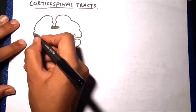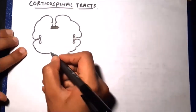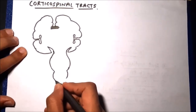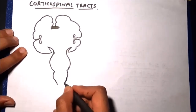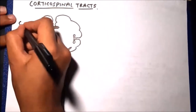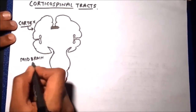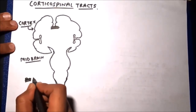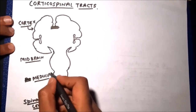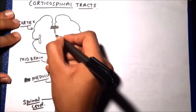This is the brain stem — the midbrain below, then the pons and medulla. Let us focus on the medulla as we will mainly discuss the course of this tract there. In the diagram we can label the cortex, midbrain, medulla, and below that the spinal cord.